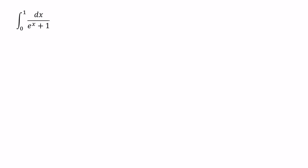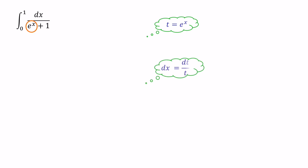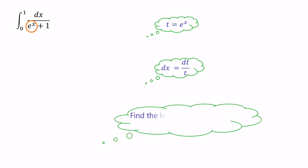Before we start, let's consider how we can solve this question. The most complex part of the function is e to the power of x. So we can essentially make a substitution t equals e to the power of x. Then we need to find the value of dx in terms of dt using differentiation. Finally, we need to find the lower and upper limits corresponding to the variable t. Using these results, we can simplify this integral. Let's jump into the question.